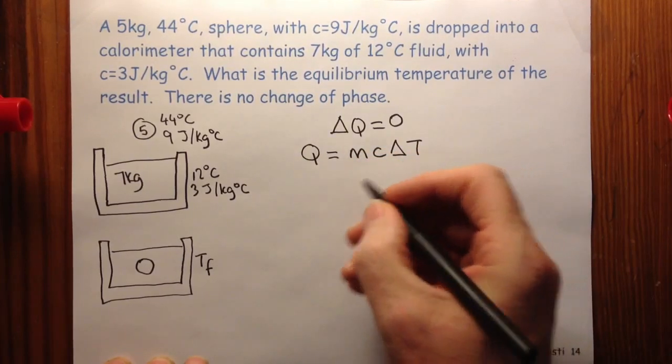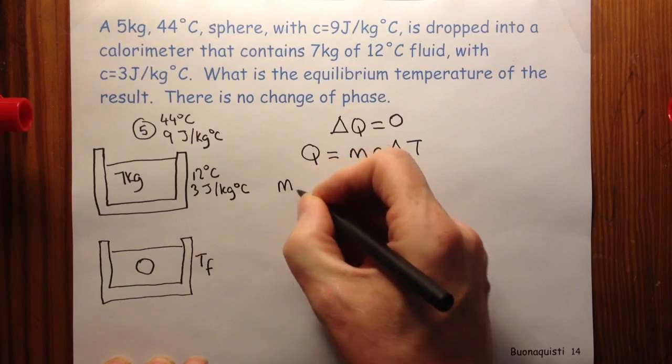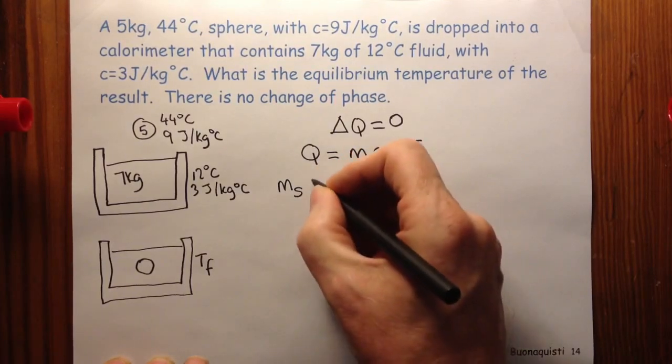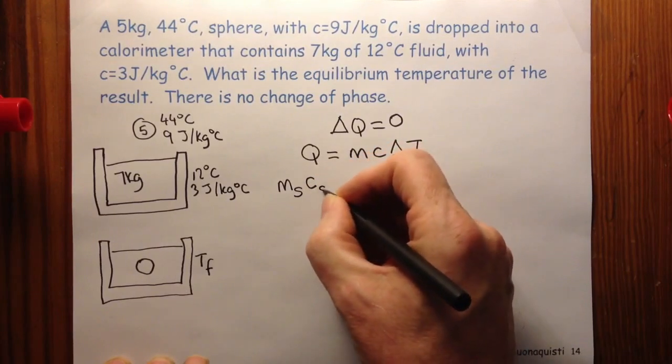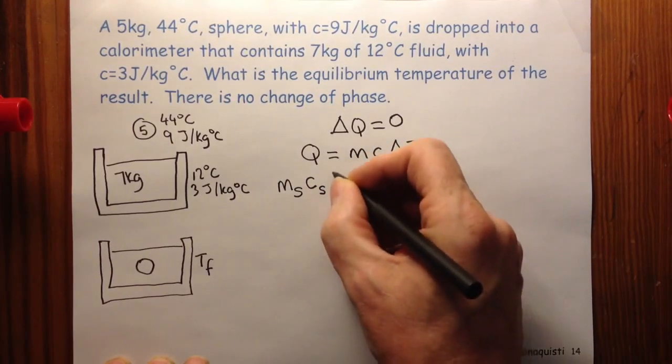So I say, the mass of the hot object which we'll call the solid times the specific heat of the solid times the temperature change for the solid,